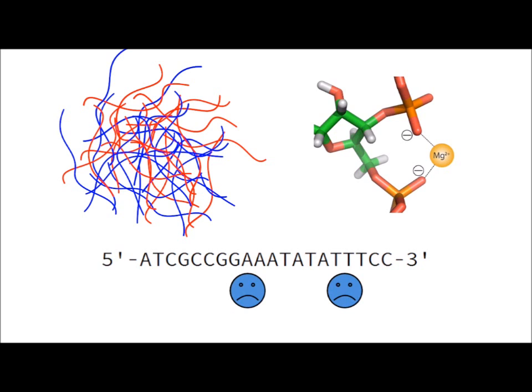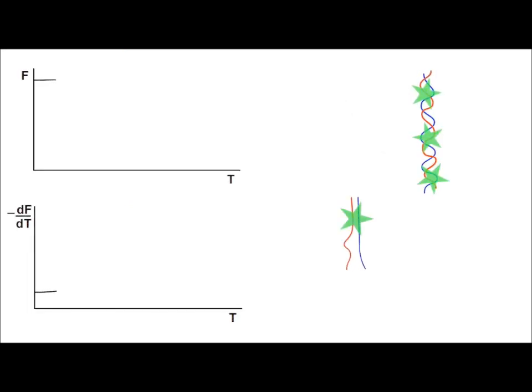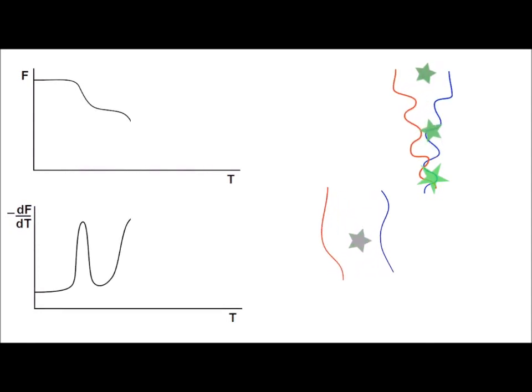Primer dimers form due to complementarity in the forward and reverse primers. Because primer dimers are small in size, as temperature increases, the double-stranded primer dimers melt first, releasing bound SYBR Green to produce an early change in fluorescence peak at their melting temperature.